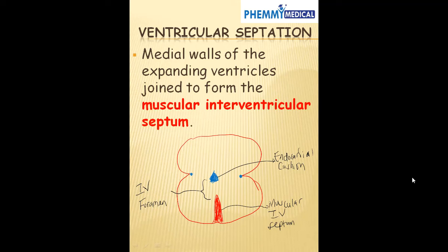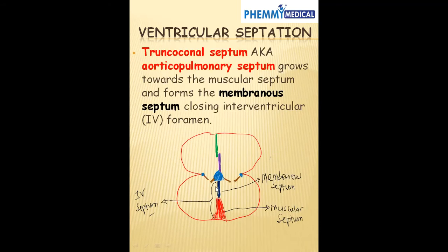The medial walls of the expanding ventricles join to form the intraventricular septum. As shown in this diagram, we have our muscular intraventricular septum, and the space between the muscular intraventricular septum and the endocardial cushion forms the intraventricular foramen, which we actually want to close. The truncoconal septum and the aorticoconal septum grow towards the muscular septum and form the membranous septum, thereby closing the intraventricular foramen.